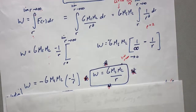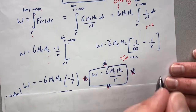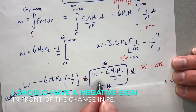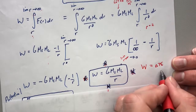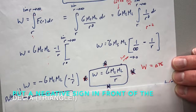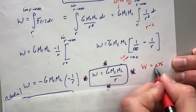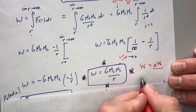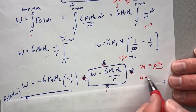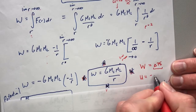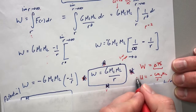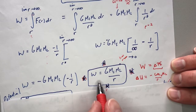So: G times mass of sun times mass of Laurentiis over r — that's how much work it takes to move Planet Laurentiis from some distance r out to infinity. Now keep in mind: how is work related to the change in potential energy? The change in potential energy function is the same as the work function, but with a minus sign out front. So the work function is G M_sun M_Laurentiis over r, and the potential energy function ΔU equals negative G M_sun M_Laurentiis over r.